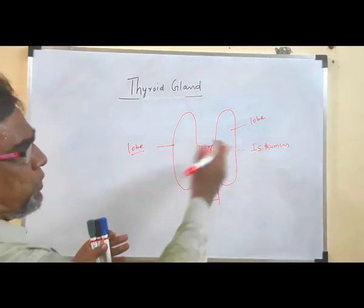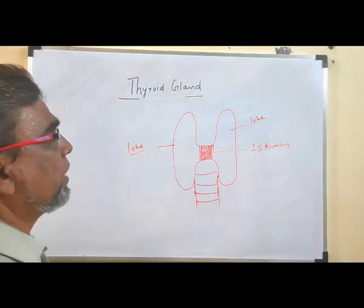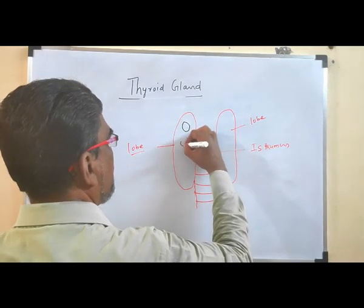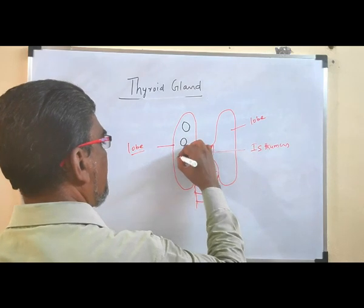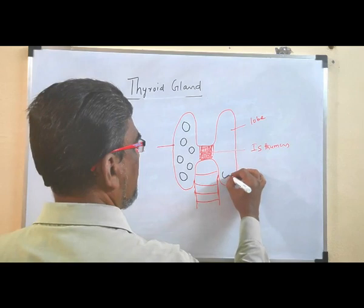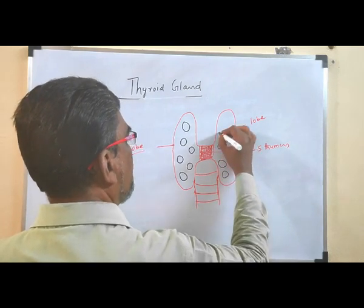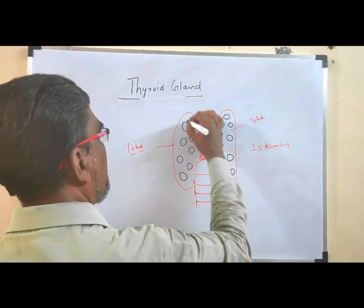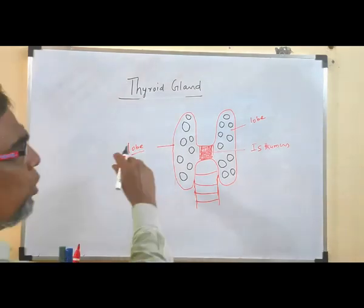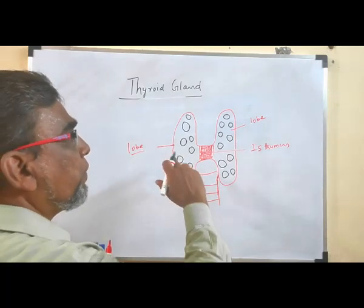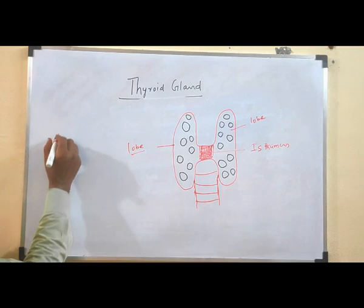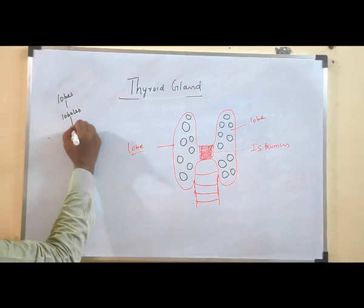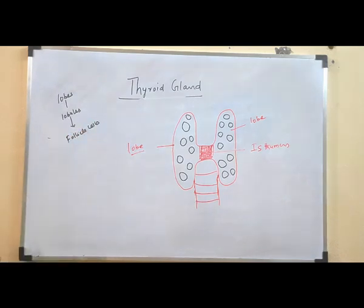Inside the lobes, several lobules are present. Inside the lobules, one more structure is present called follicle cells. Some follicle cells are present inside the lobules. The follicle cells are lined with a special type of cells. This is the basic structure.